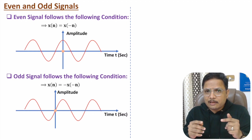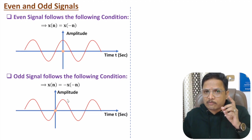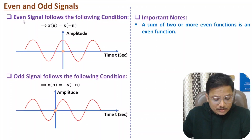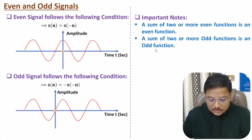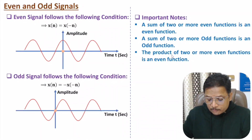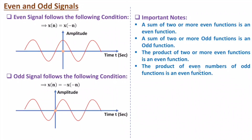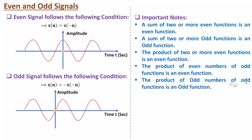Based on even and odd signals, there can be questions in competitive examinations. Key points: the sum of two or more even functions results in an even function; the sum of two or more odd functions results in an odd function. The product of two or more even functions is an even function. The product of an even number of odd functions is an even function, while the product of an odd number of odd functions is an odd function.